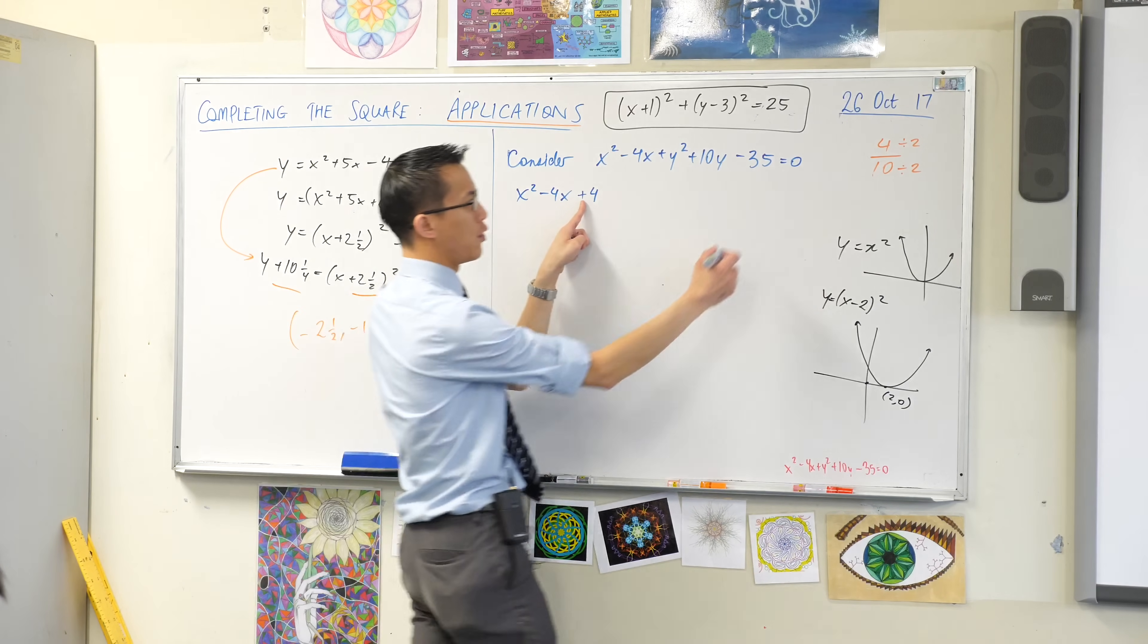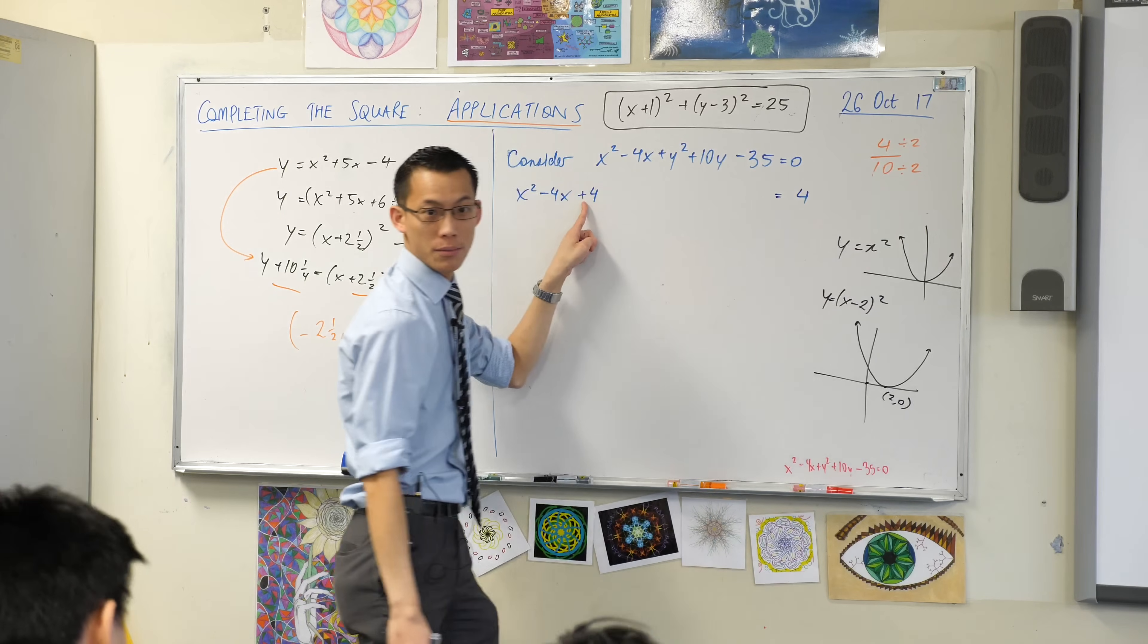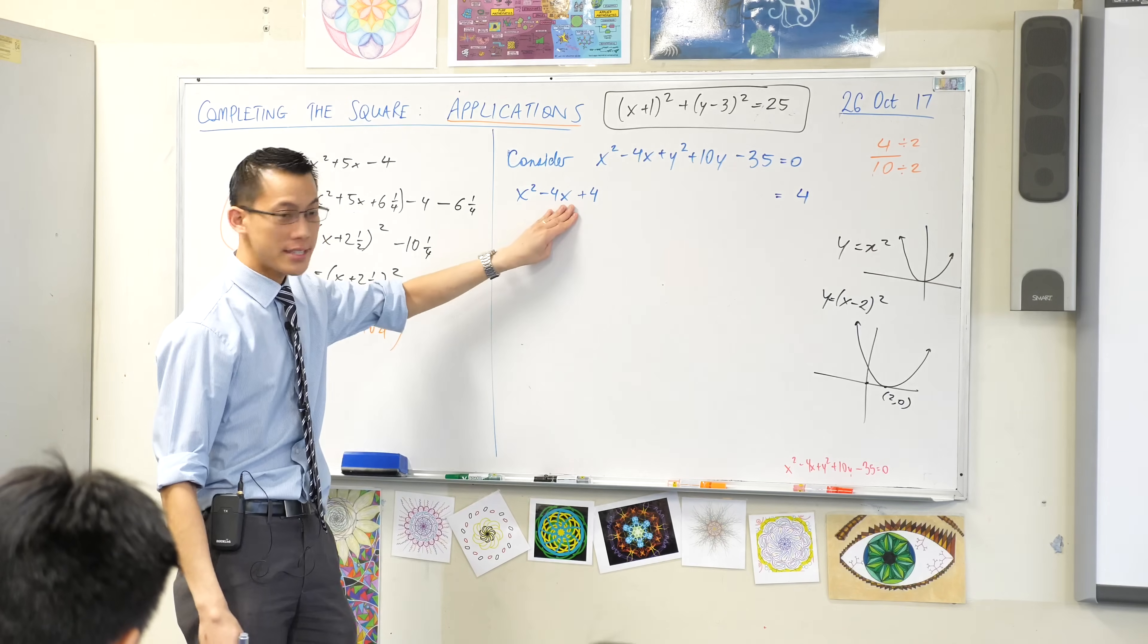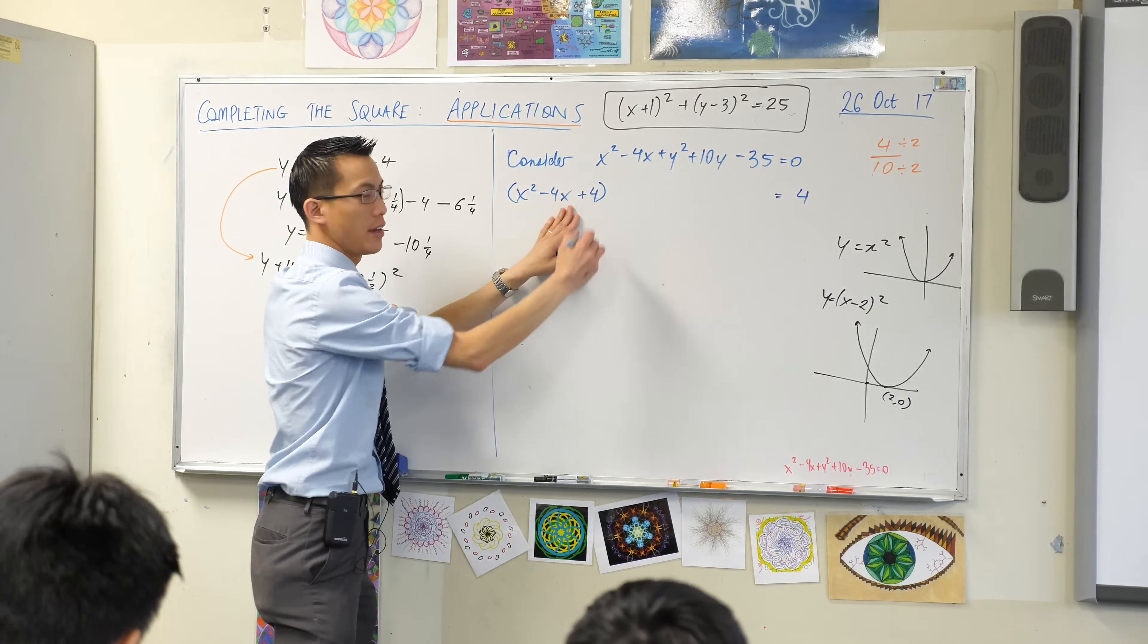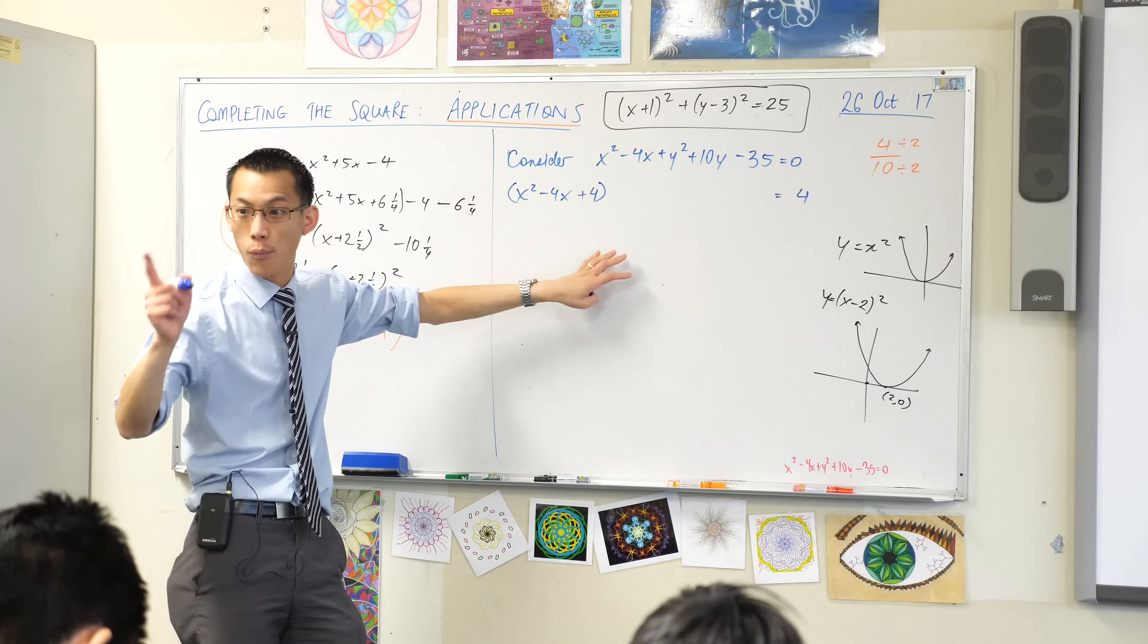I've just added four. So all the way over here on the other side of the equation, I'm going to add four there as well, because I want to keep balance. This thing here is now a square. It's ready to factorize. I'm not going to do that yet. I've got more stuff to write on this line, but I will on the next line.